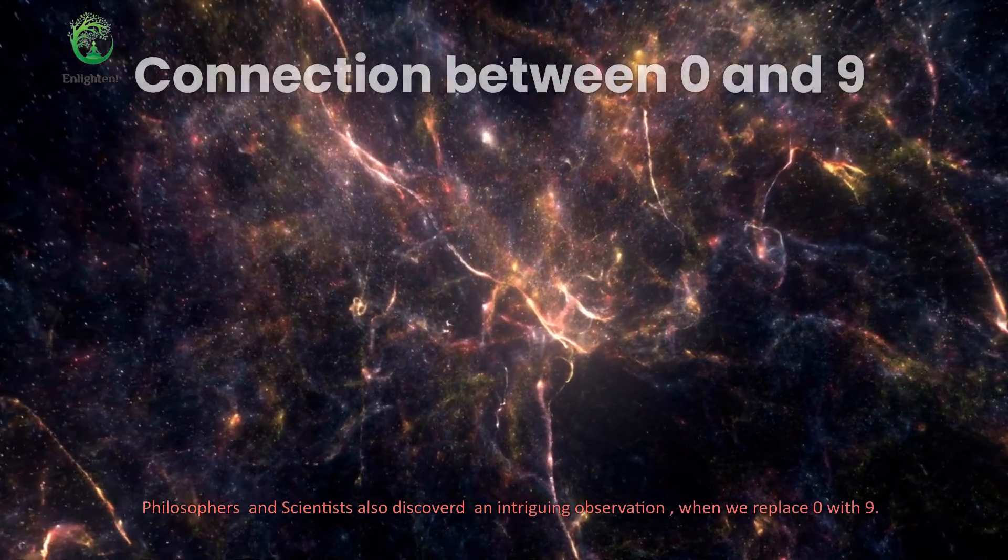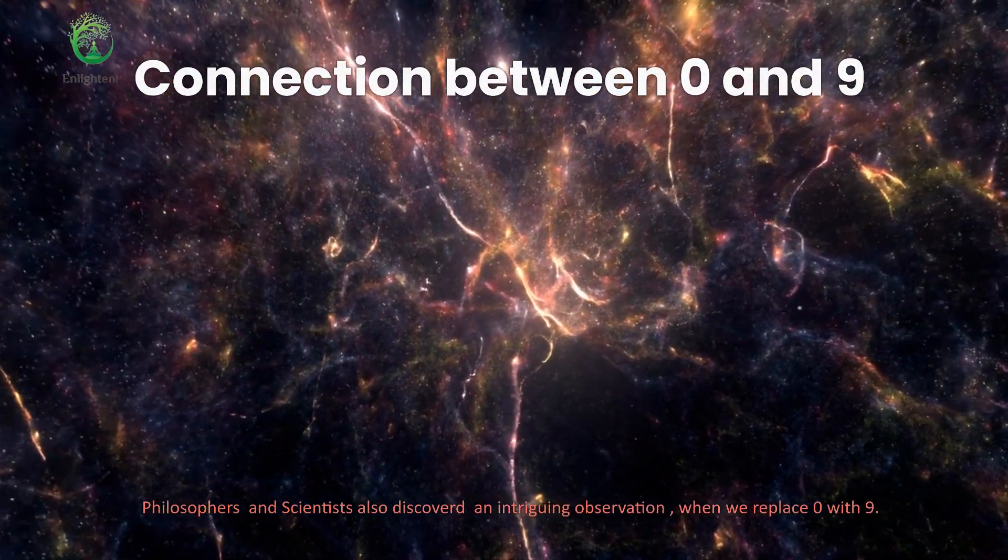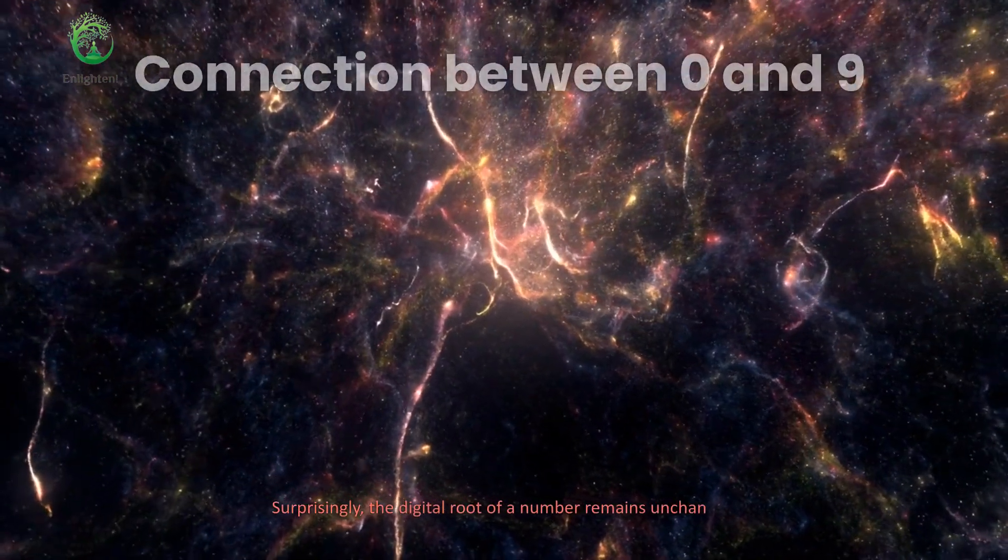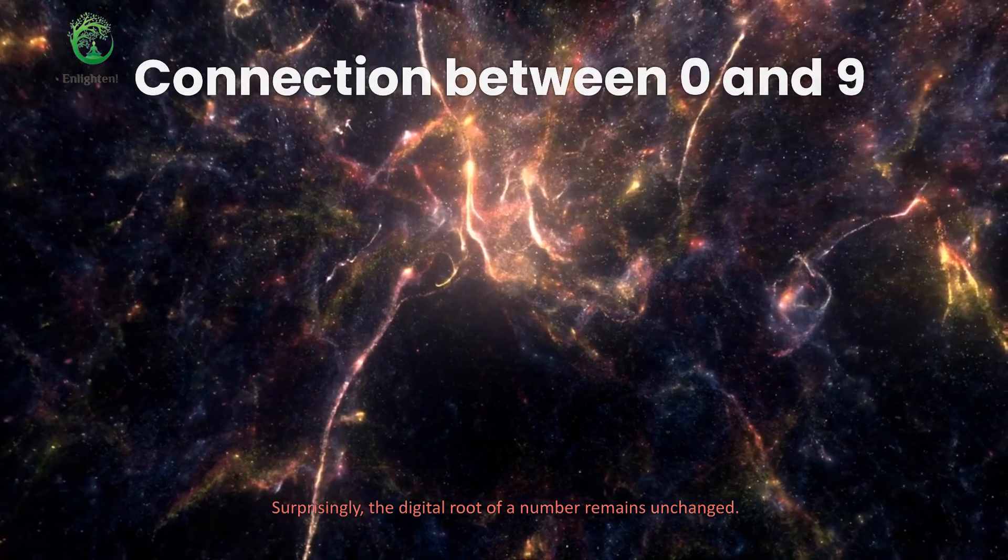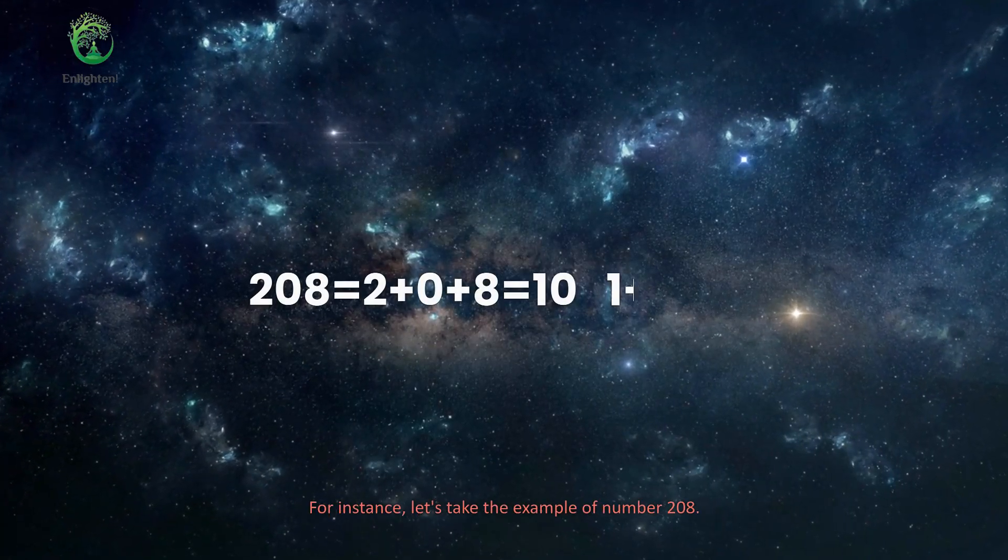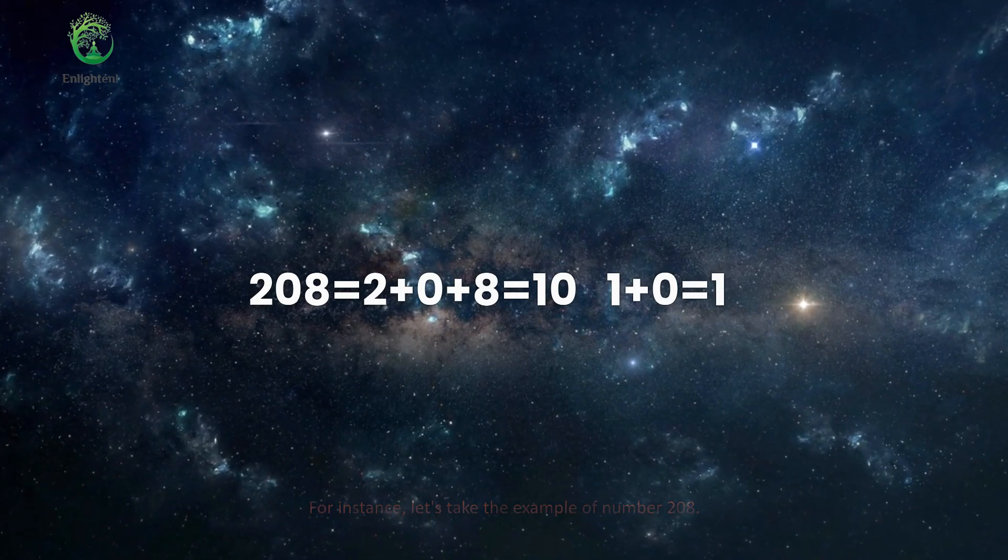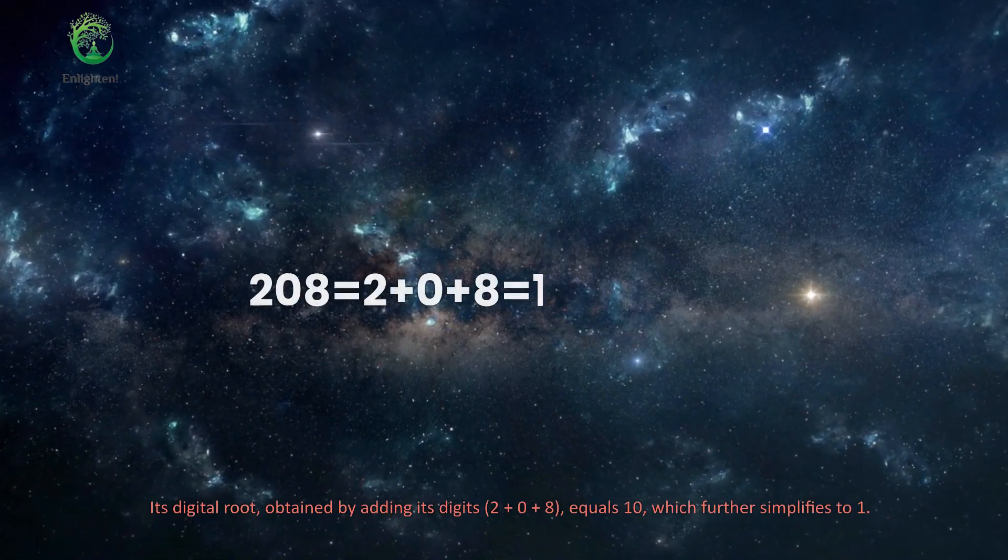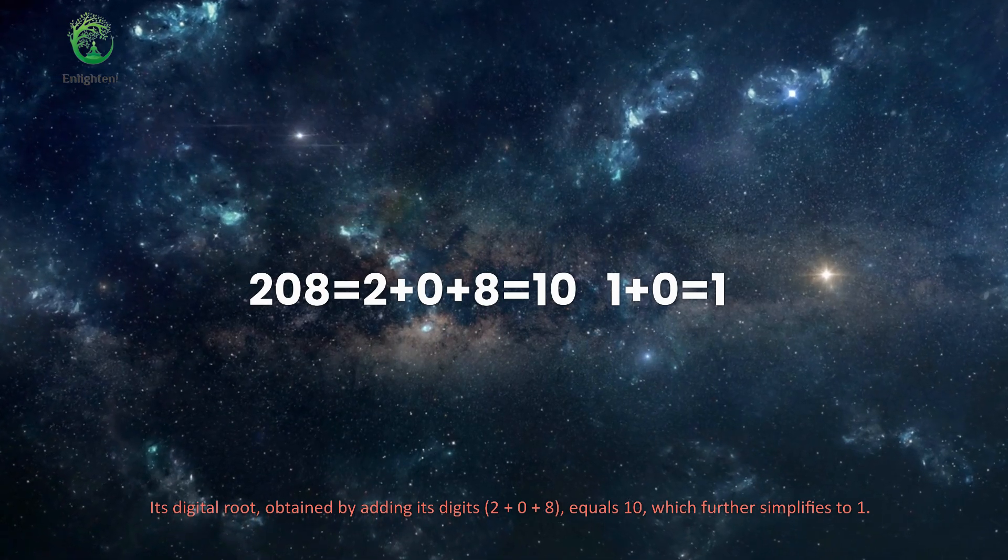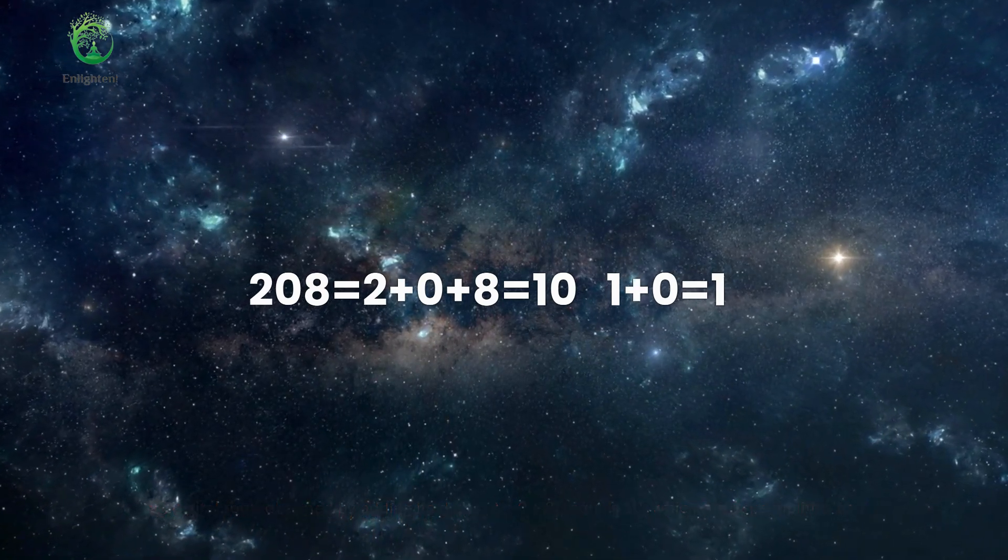Philosophers and scientists also discovered an intriguing observation when we replace 0 with 9. Surprisingly, the digital root of a number remains unchanged. For instance, let's take the example of number 208. Its digital root, obtained by adding its digits, 2 plus 0 plus 8, equals 10, which further simplifies to 1.